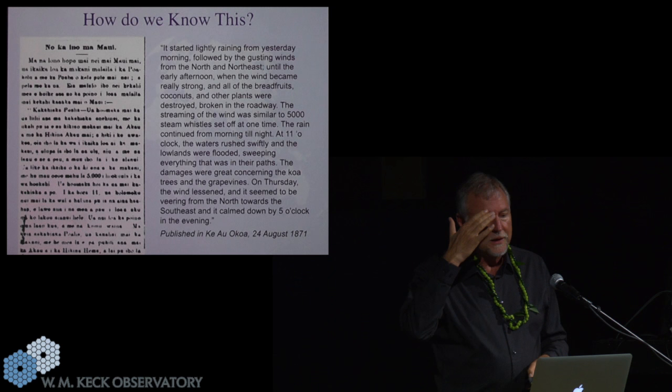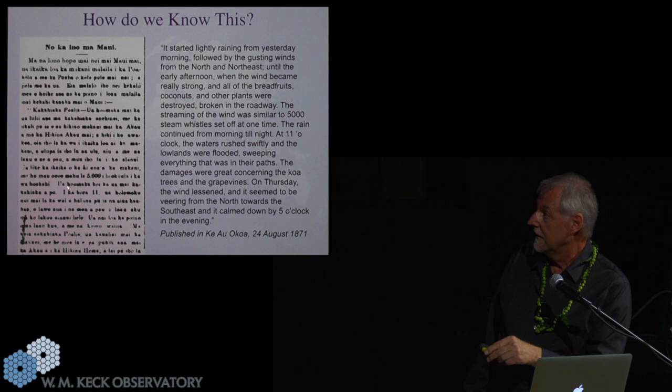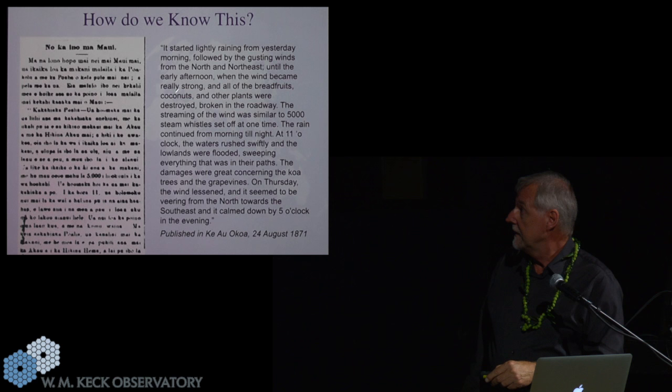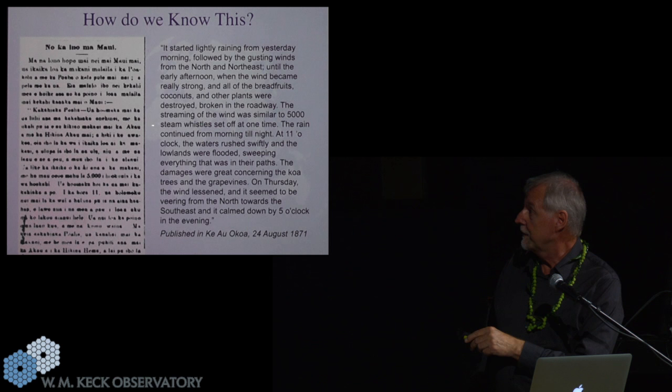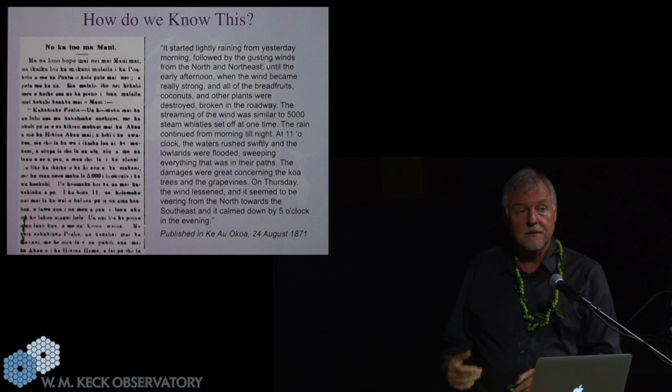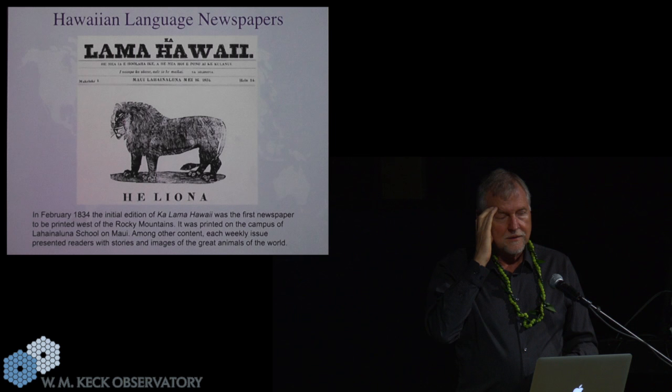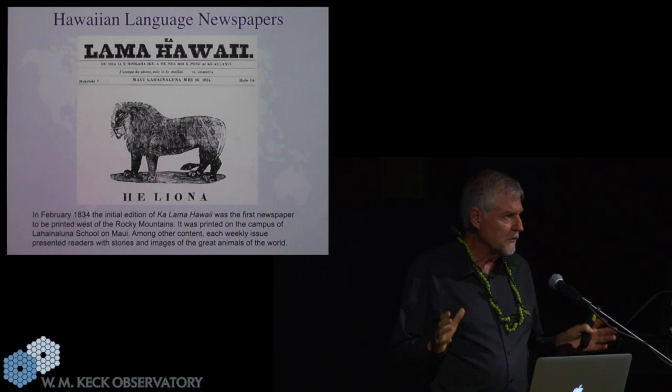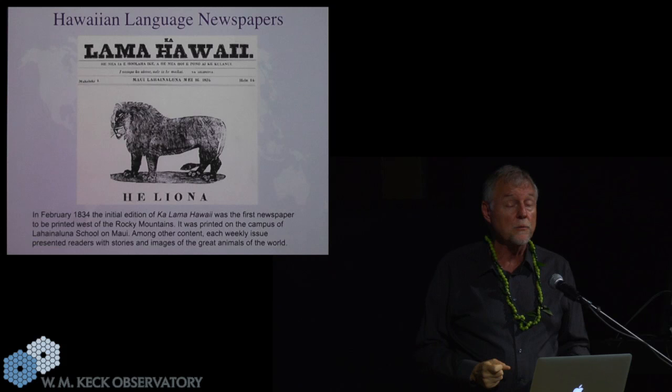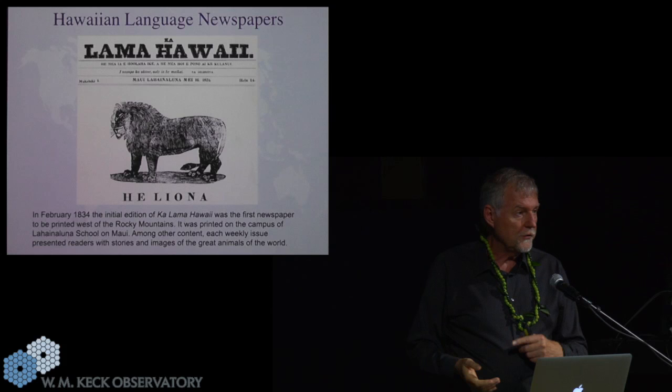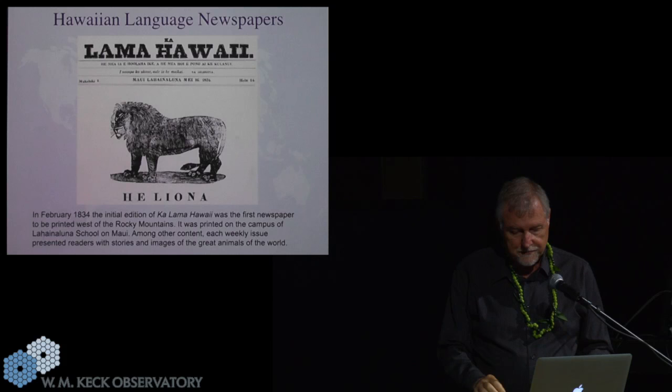How do we know this? Well, because of Hawaiian language newspapers. You can see, I can't read this either. This is old Hawaiian. The accounts are very graphic and descriptive, things like the wind was like 5,000 steam whistles being set off at once. And this was published a few days after the hurricane. It really struck a chord in me that the Hawaiians were so prolific and such good observers that we had ability to do this research. And we're actually doing more research now on tsunamis and droughts and other interesting things, including El Nino-type research.